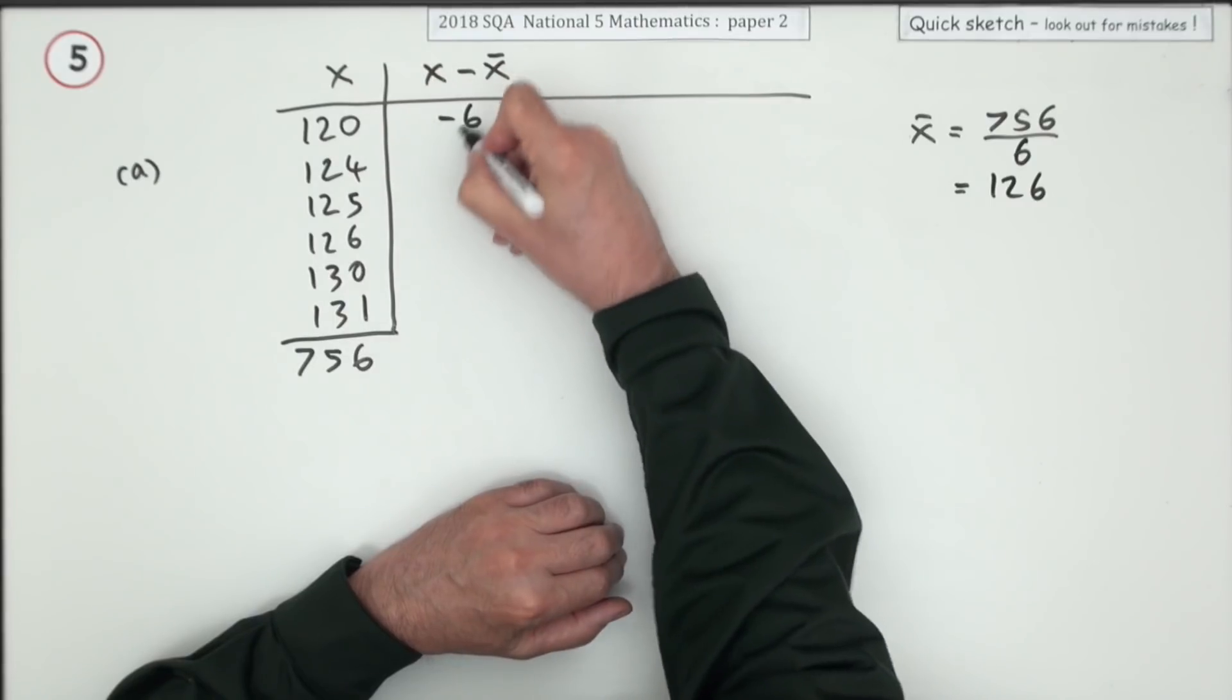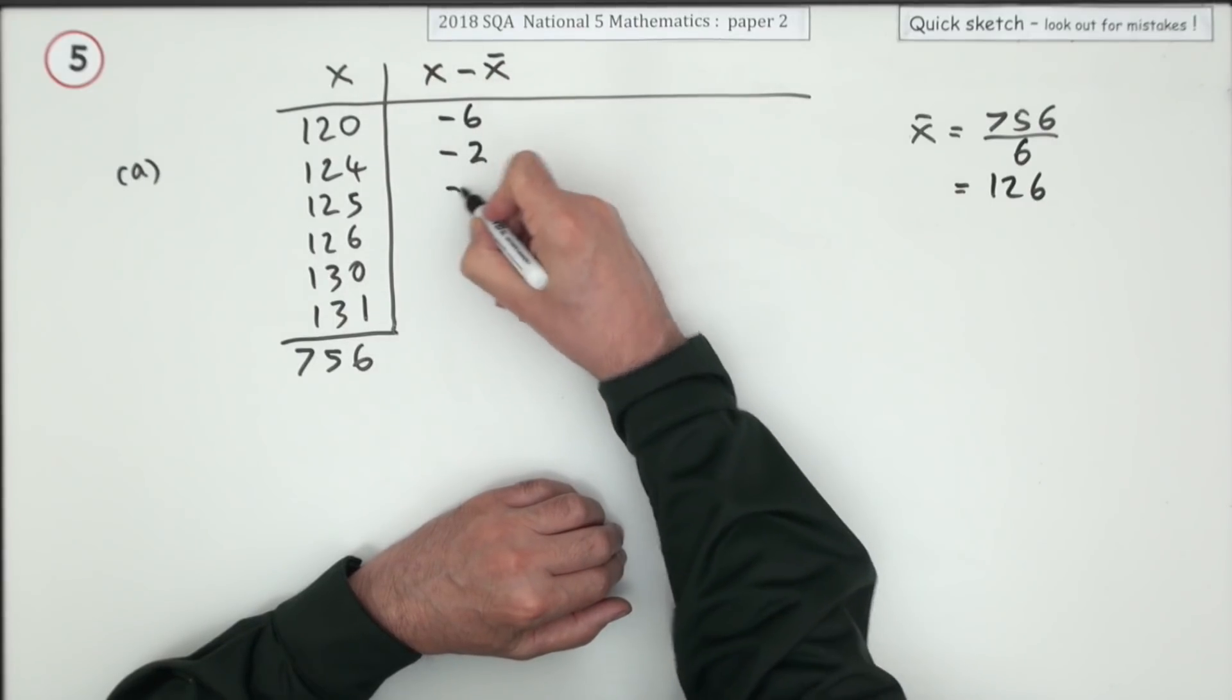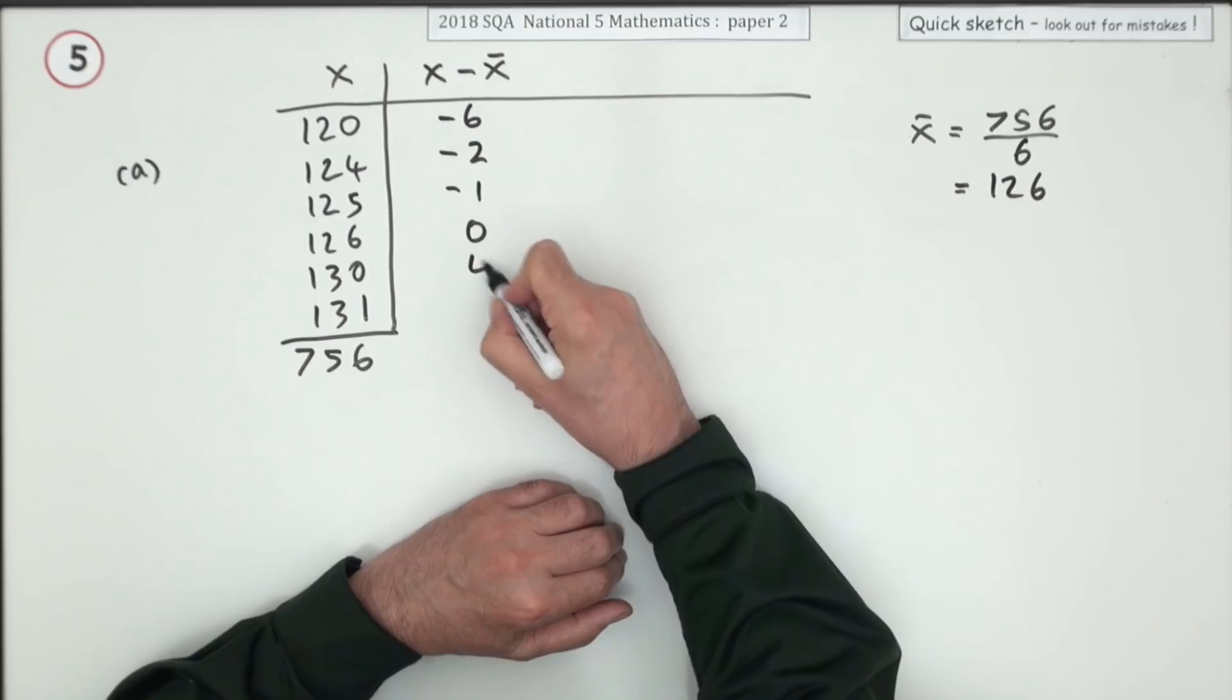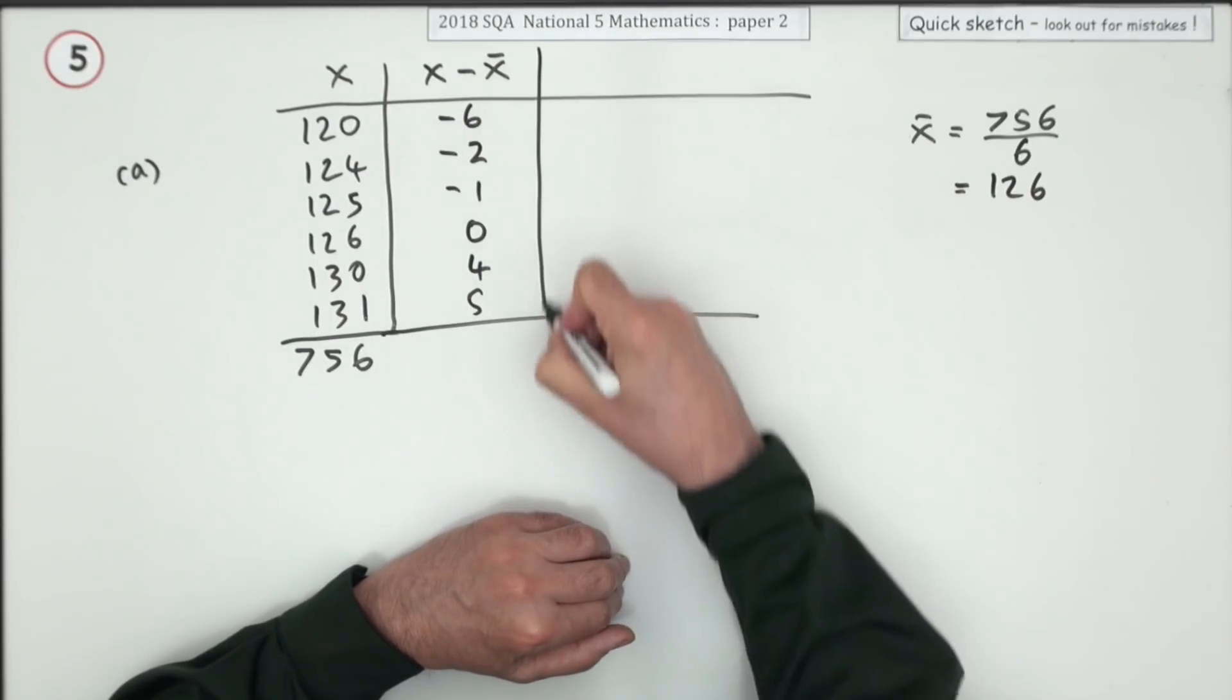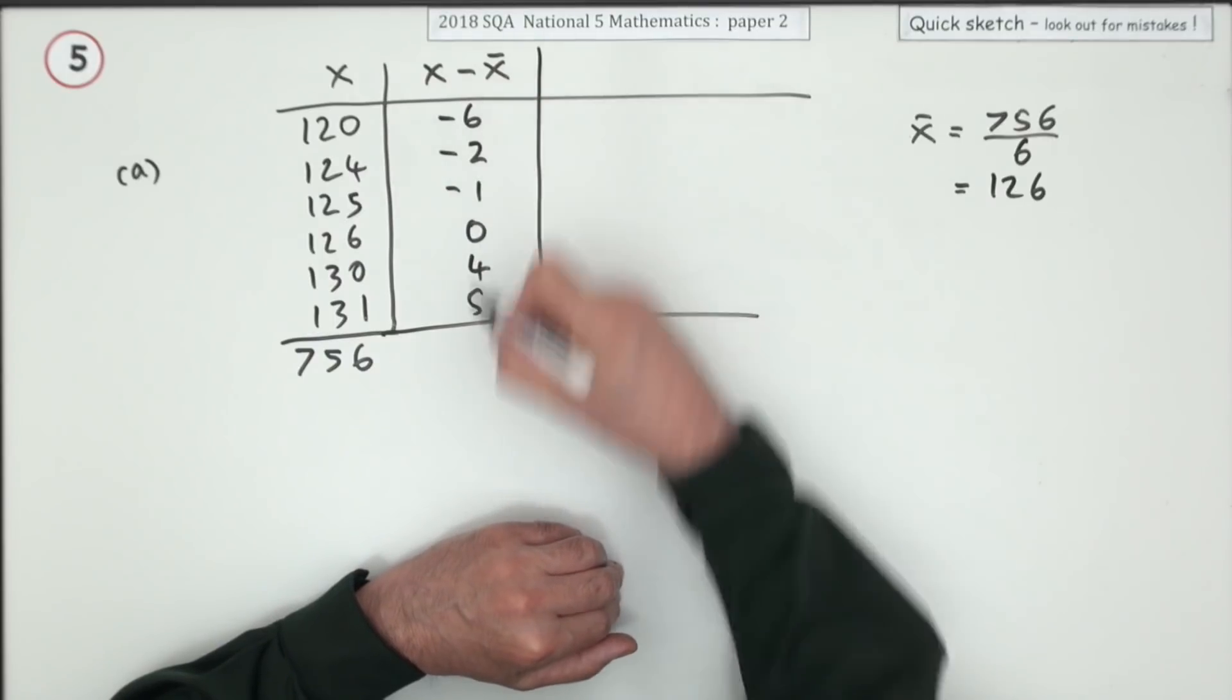So when it comes to the next column, X minus the mean, you're taking 126 from each of them. So that's six below, that's two below, that's one below, that's bang on, that's four above, and that's five above. A little check - just make sure they come to zero.